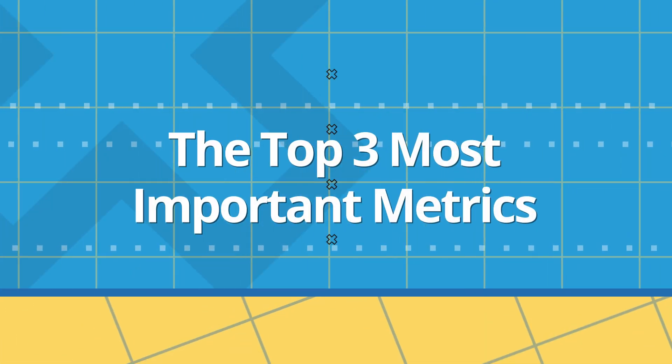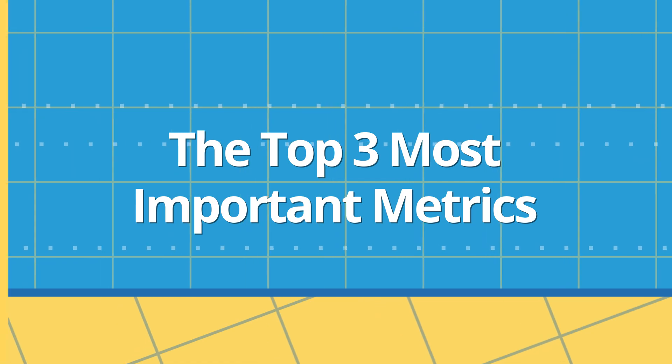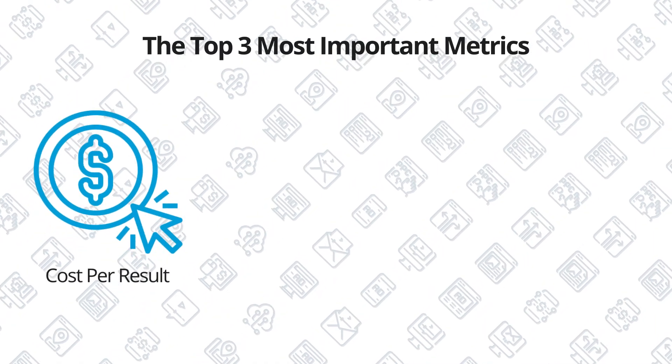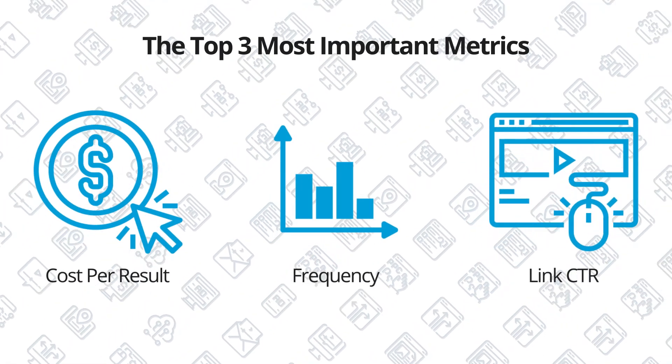I want to start by looking at the top three most important metrics: cost per result, frequency, and link CTR.